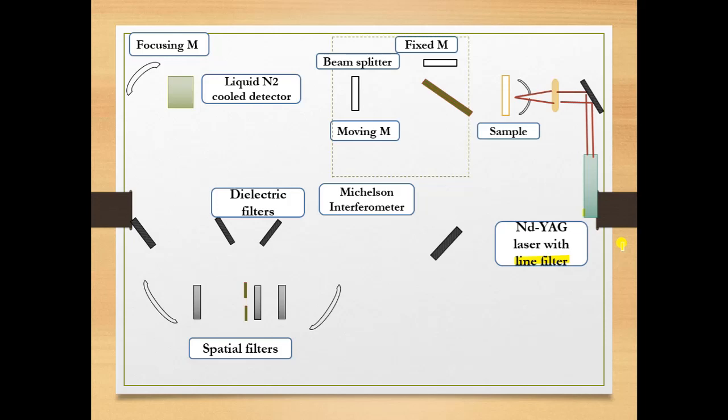It will pass through the beam splitter. This is the beam splitter. Whatever radiation is passing through the beam splitter, the energy passes through. There are two mirrors: one is a moving mirror.